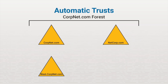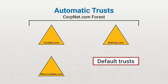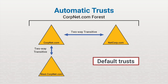Now let's look at the five types of trusts. The first is automatic trusts. Automatic trusts are the default trusts created when Active Directory is installed. These default trusts are two-way transitive trusts between any child domains in a tree. For example, corpnet.com has a two-way transitive trust with west.corpnet.com. Corpnet.com also has a two-way transitive trust with netcorp.com because they are both trees in the same forest. If all domains are in the same forest, the trusts may all be set up automatically.